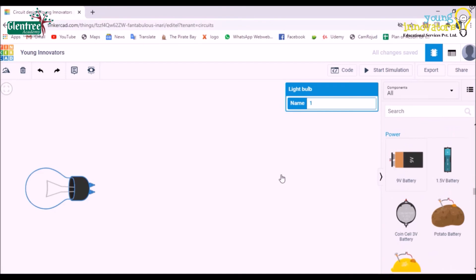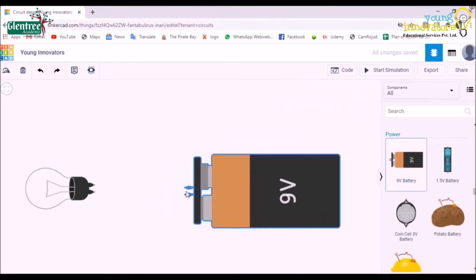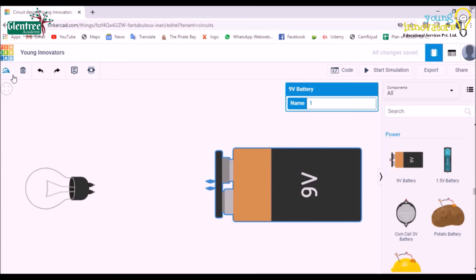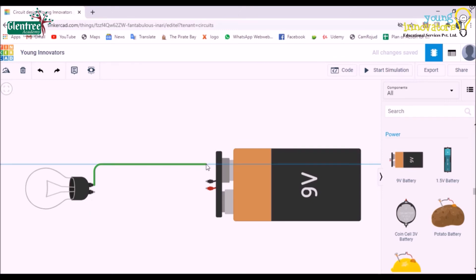Now we shall choose a battery and place it on the worksheet. Now click on either of the component terminals to extend or drag the wires. To check the working of the circuit, click on the 'Start Simulation' option and check if the bulb glows.